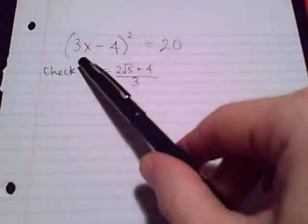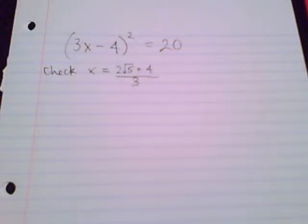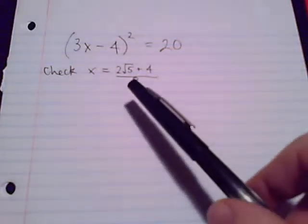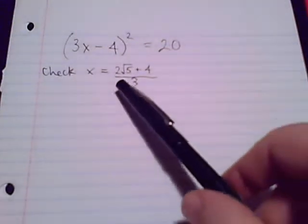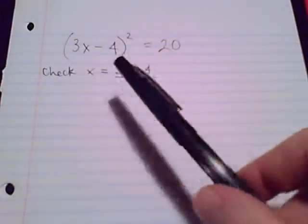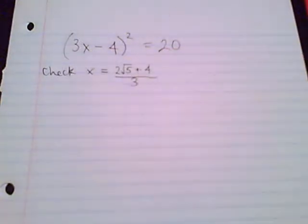From the previous example, (3x - 4)² = 20. We solved it with the square root method, doing square root on each side. Here's one of our solutions, the one where we used the positive. The other solution had negative 2√5 + 4 over 3.